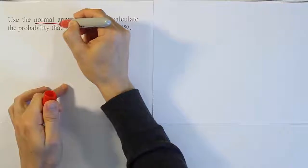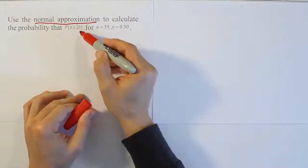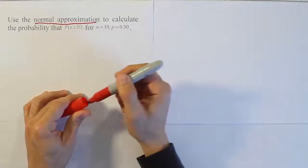Use the normal approximation to calculate the probability that x is greater than or equal to 21 for n equals 39 and p equals 0.5.